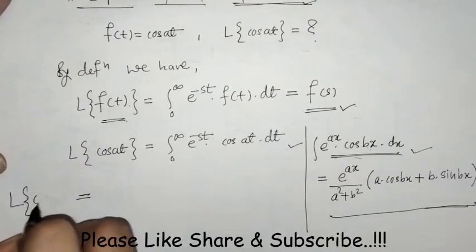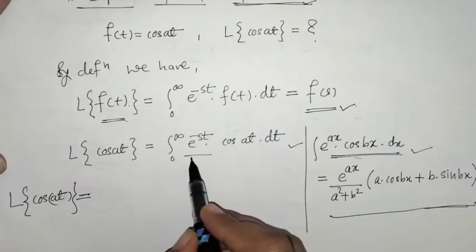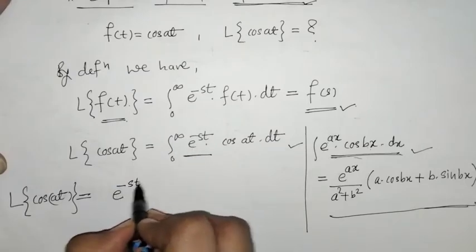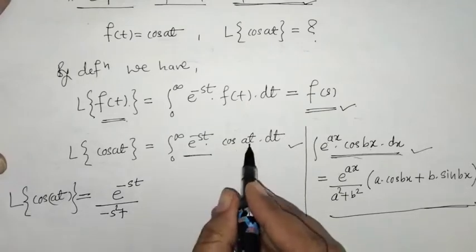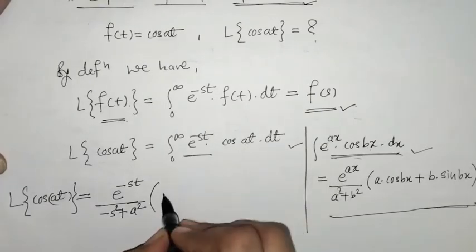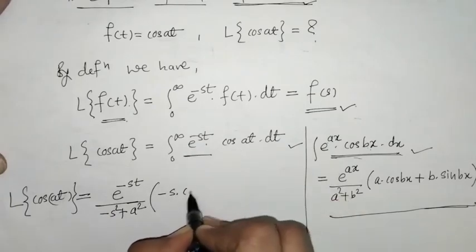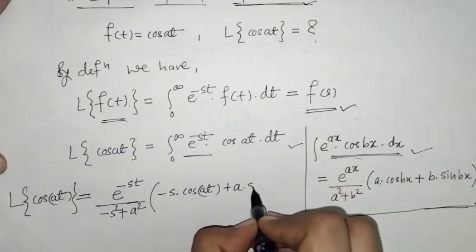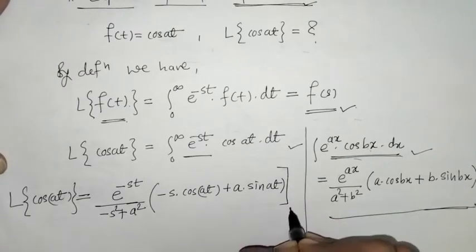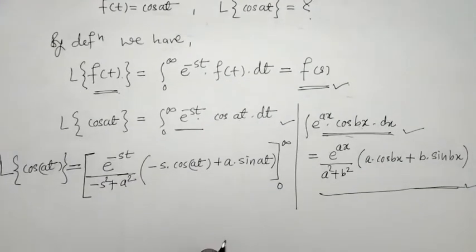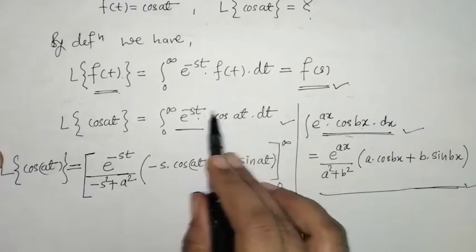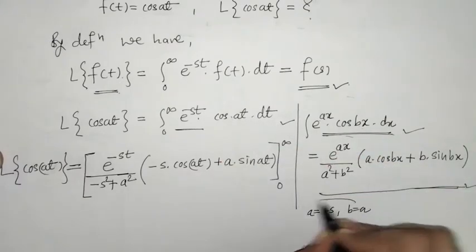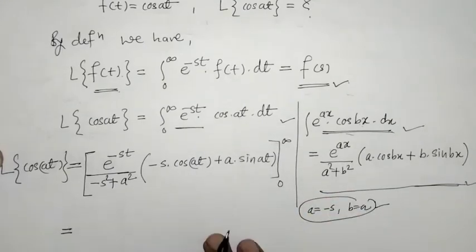So for the Laplace of cos(at), on doing the comparison with both integrals, we write: e raised to minus s·t divided by (minus s)² + a², in the bracket: minus s times cos(at) plus a times sin(at). Here the comparison gives us a = minus s and b = a, and we substitute these values.